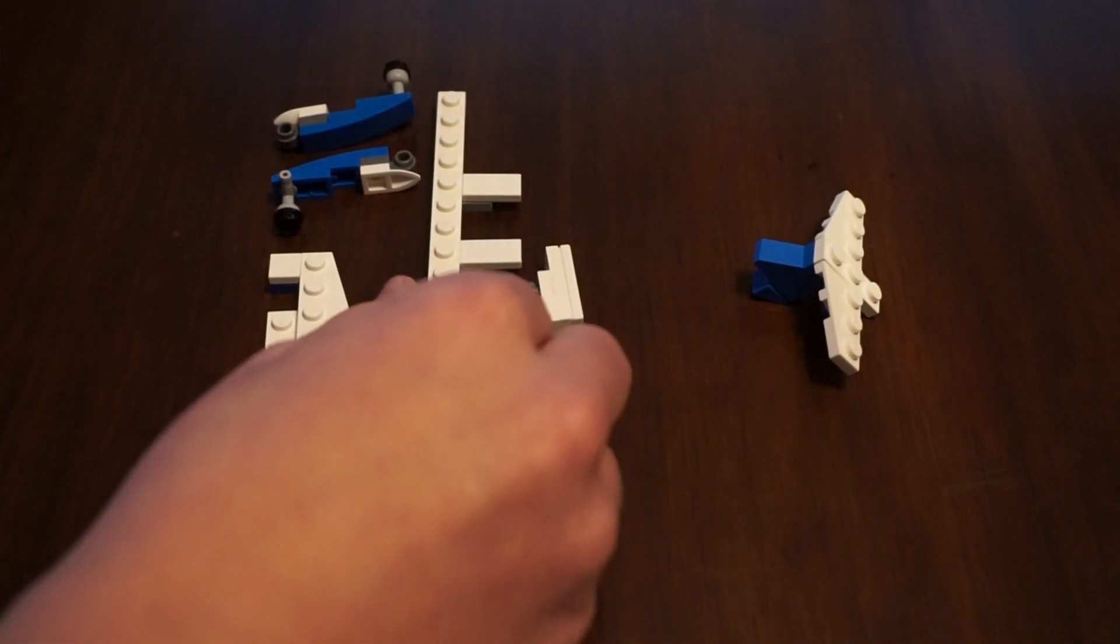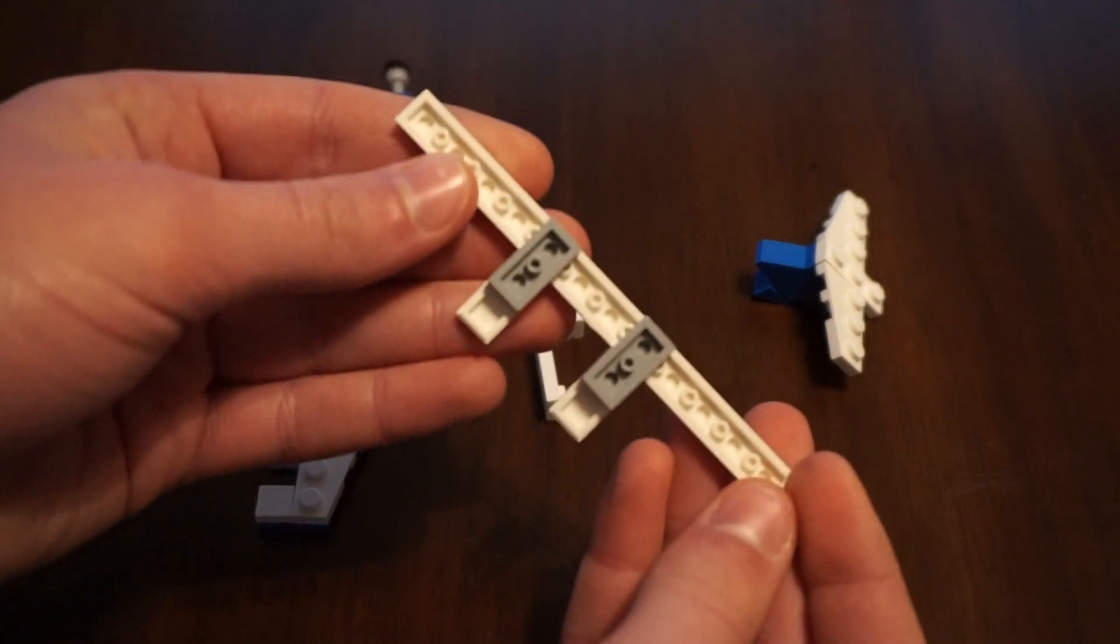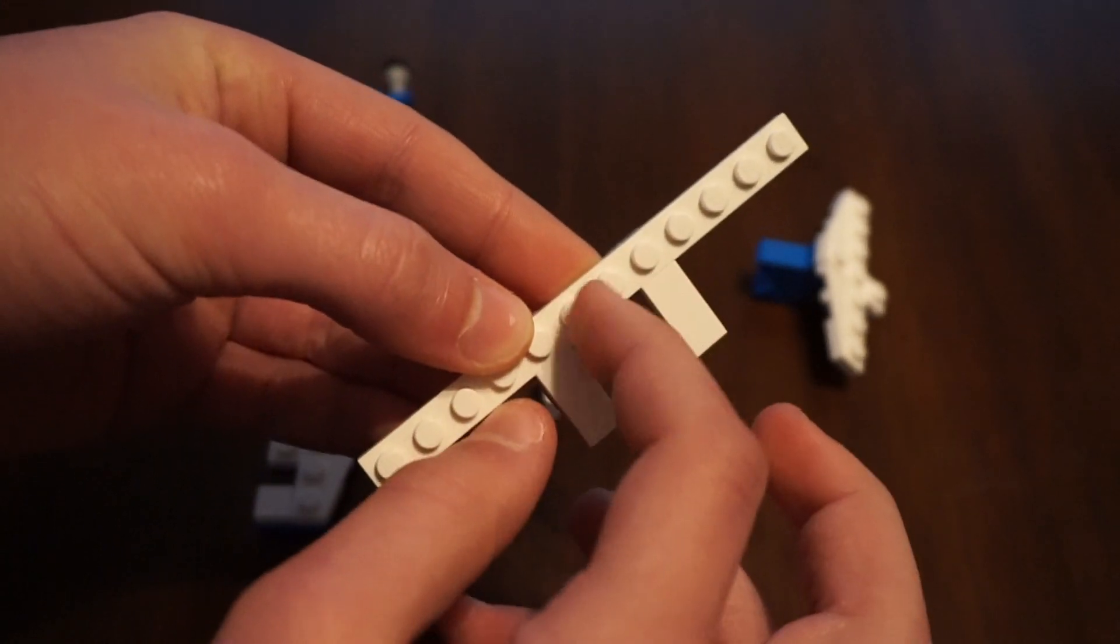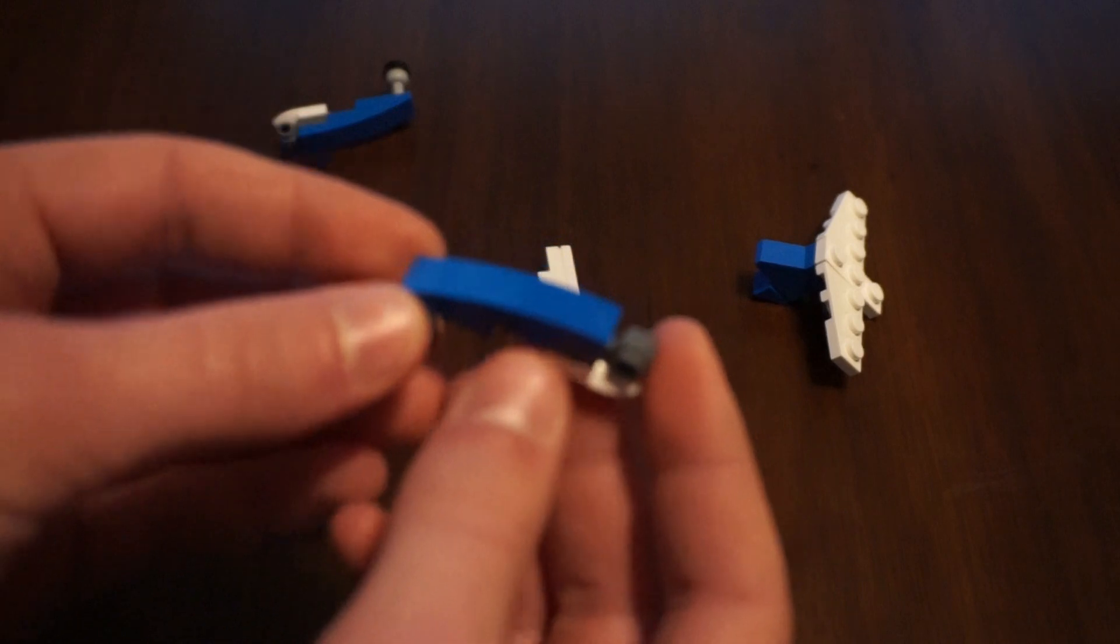Now we're gonna put the wing together by taking a one by twelve brick, and putting two slanted flat bricks near the center leaving a two block gap, and now this is where it gets a little bit complicated.